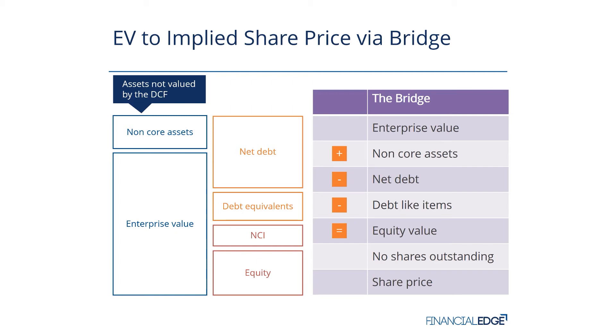Once we're there, all we need to do is divide by the number of shares outstanding and that will get us to an implied share price.